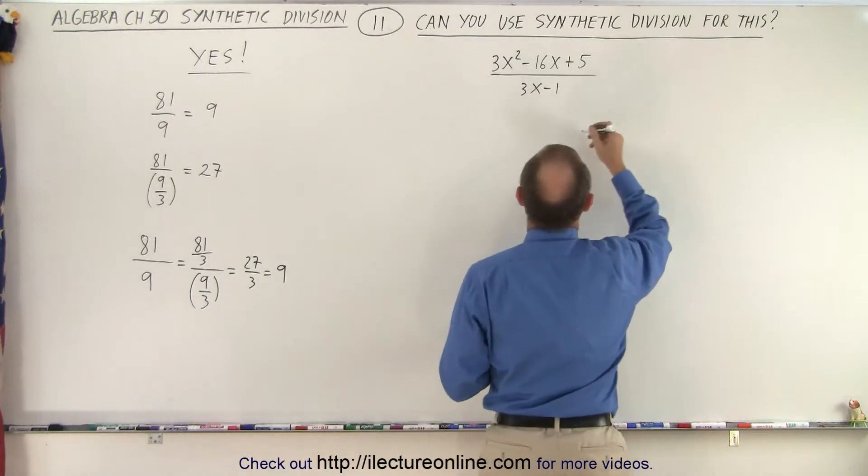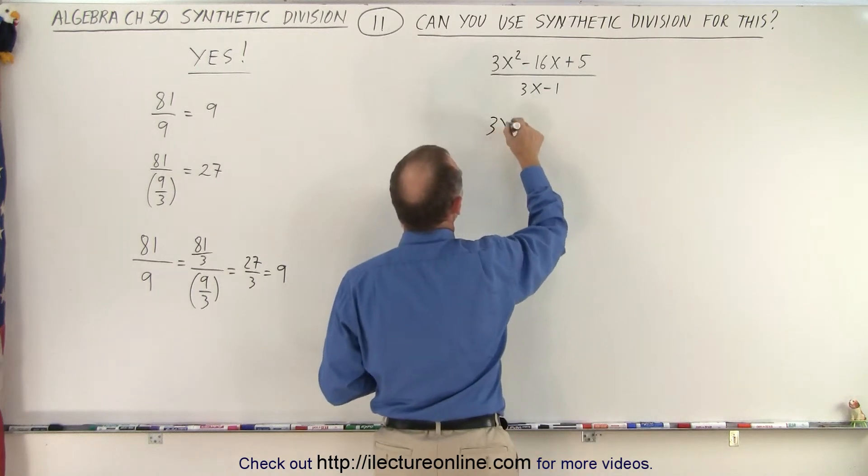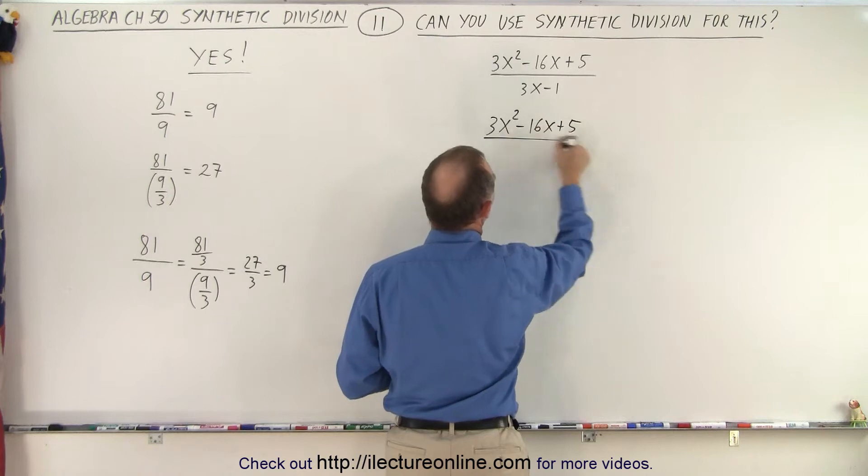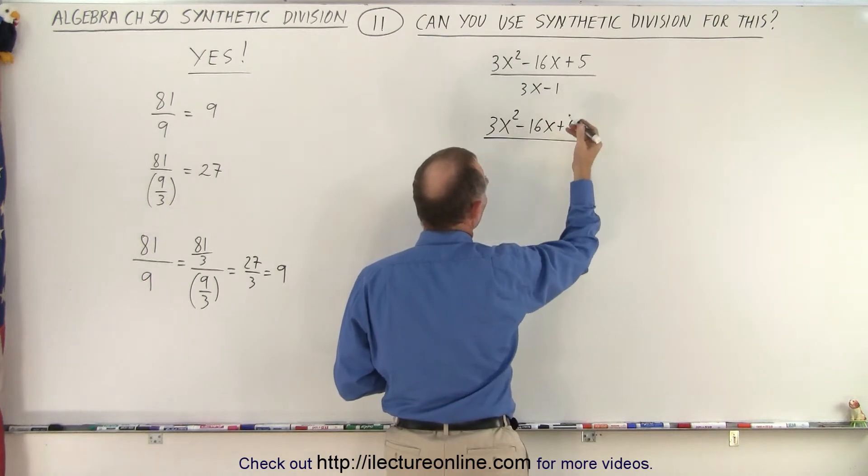So notice what happens. I'm going to take that and write this as 3x squared minus 16x plus 5 divided by, take the denominator divided by 3, I will get x minus 1 over 3.